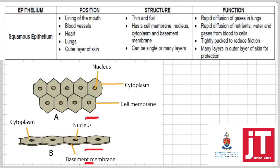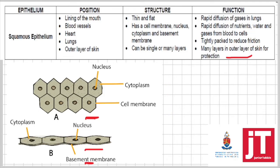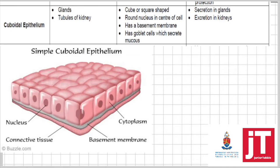In the outer layer of your skin, any tissue on the outside is there for protection, so squamous epithelium protects all the underlying tissues. As you can see in the picture, these cells are tightly packed with a cement substance that sticks the cells together, reducing friction. The blood vessels also carry nutrients and water, so a single layer of cells allows nutrients and water to move out faster.